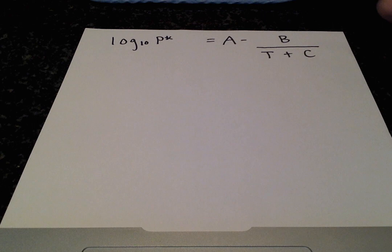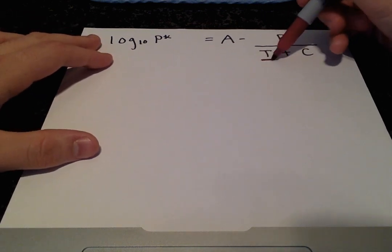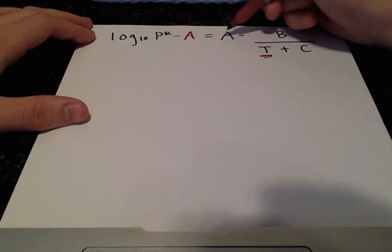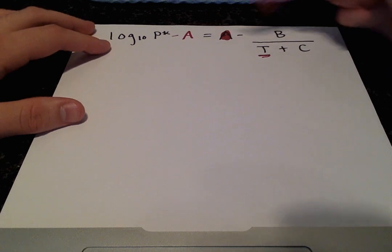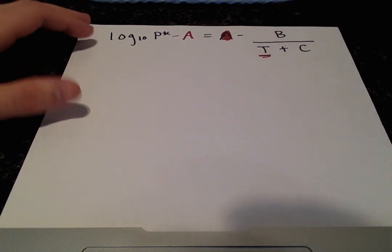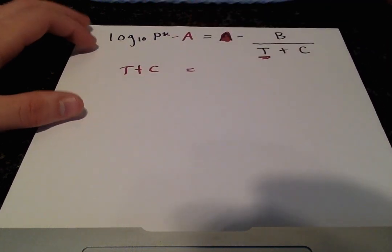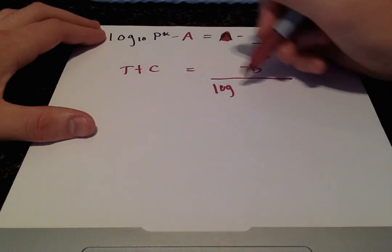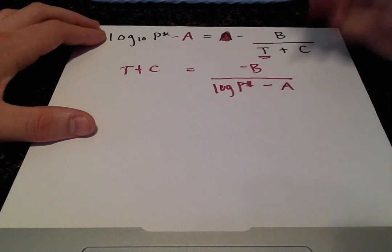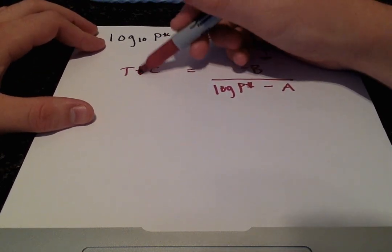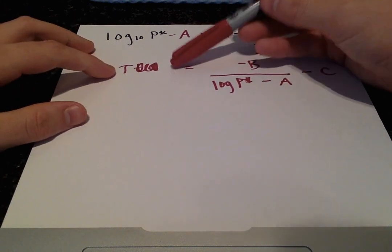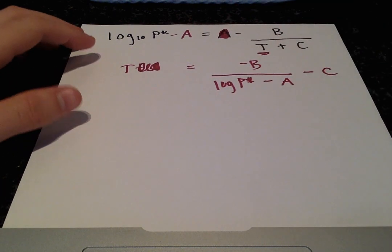so we just want to now isolate the temperature, and we do that by subtracting A over, and then we can do the diagonal cross multiplication and division. And then we'll get T plus C is equal to negative B over the log of the vapor pressure minus A. And to just get T alone, we're going to subtract the C over.